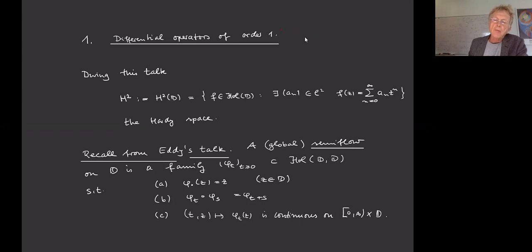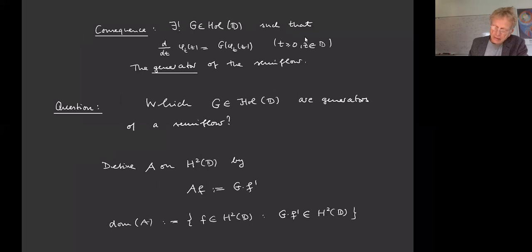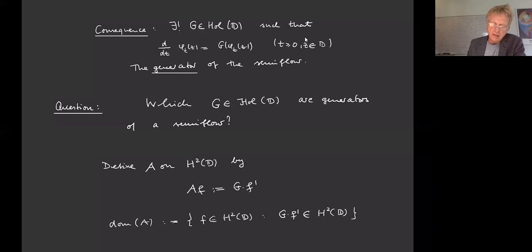One can associate a generator to such a flow. There exists a unique holomorphic function g on D such that φ(t) is the flow generated by the differential equation: the derivative of φ(t,z) with respect to t equals g(φ(t,z)). This g we call the generator of the semi-flow.